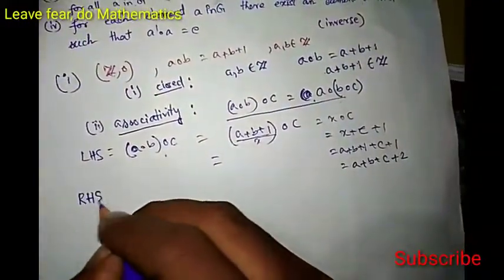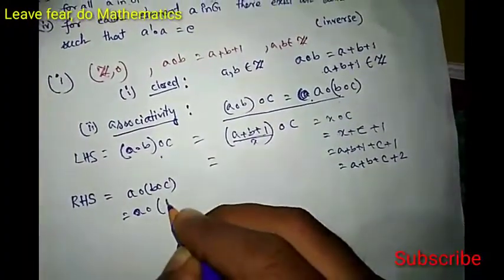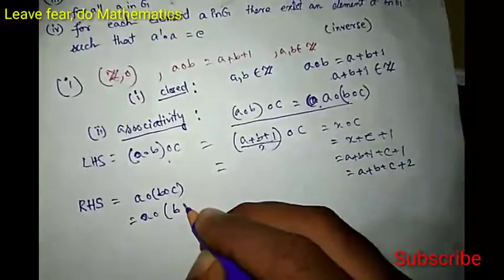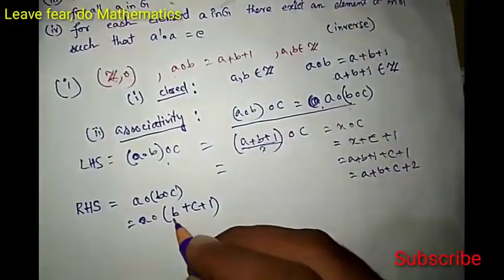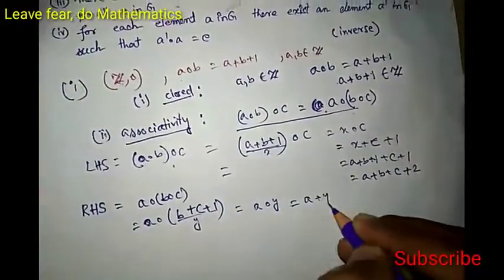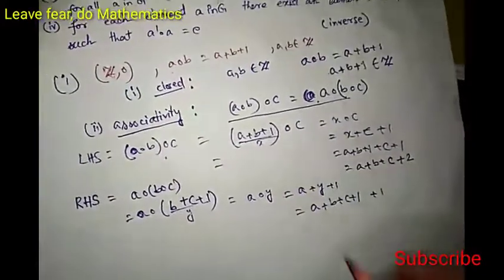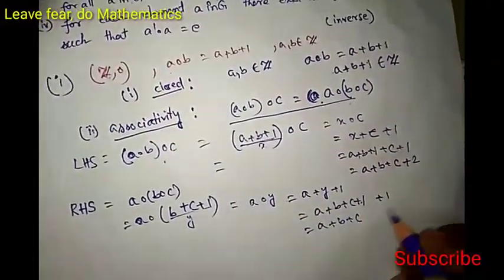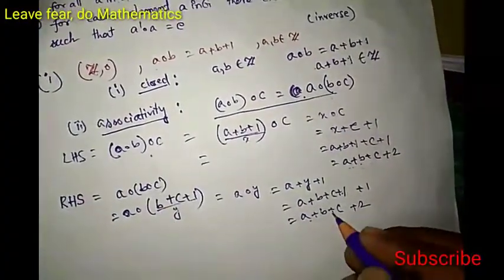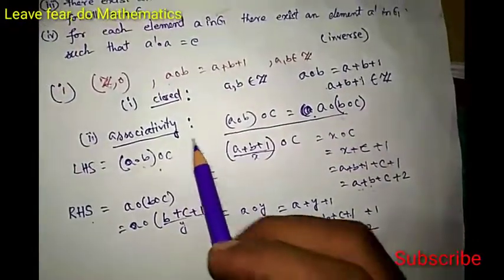For the right-hand side: A ∘ (B ∘ C). B ∘ C equals B plus C plus 1. Let Y equal B plus C plus 1. Then A ∘ Y equals A plus Y plus 1, which gives A plus B plus C plus 1 plus 1, so A plus B plus C plus 2. Left-hand side equals right-hand side, so (A ∘ B) ∘ C equals A ∘ (B ∘ C). This system is associative.